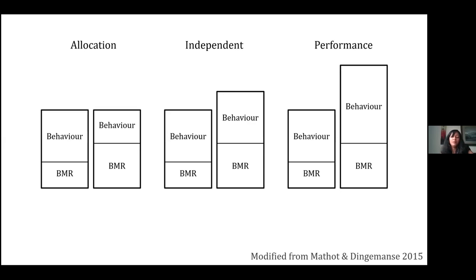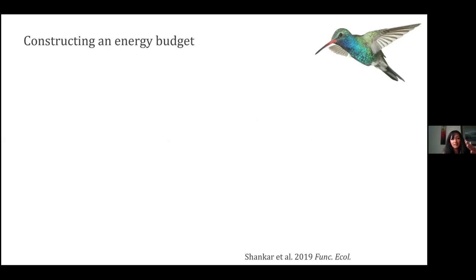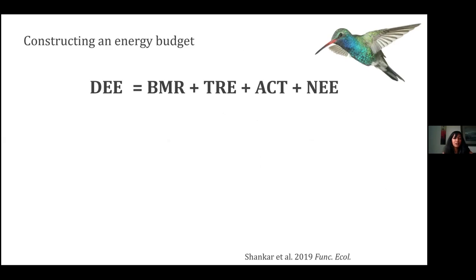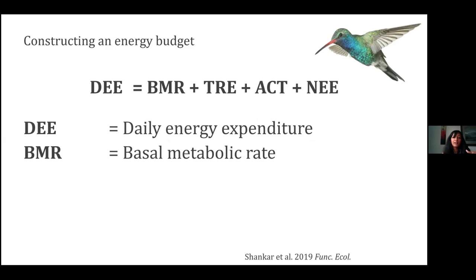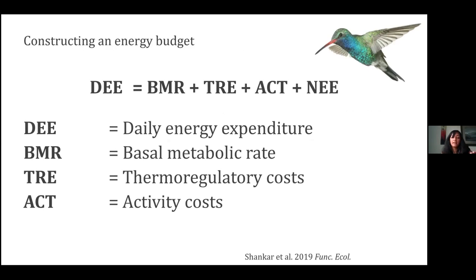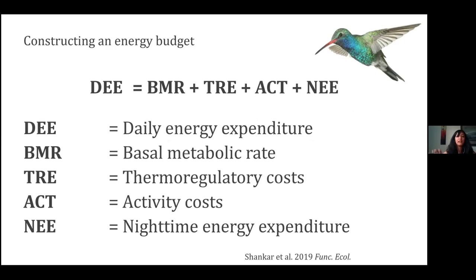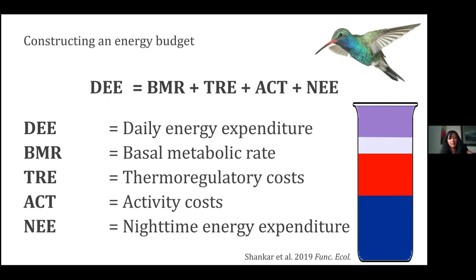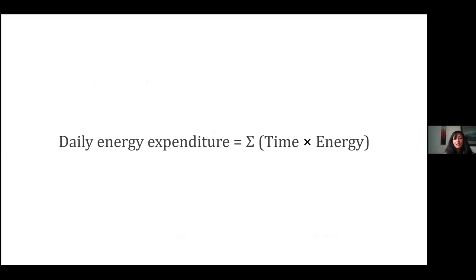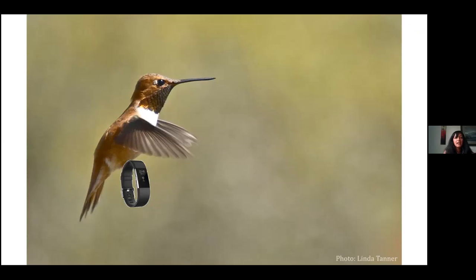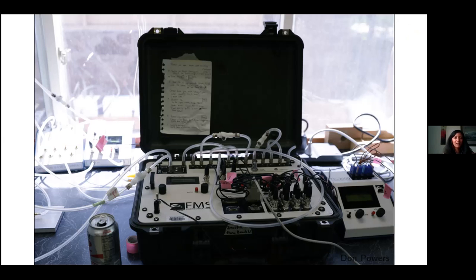We've already seen that hummingbirds don't fit the allocation model because their daily energy expenditure can change. To construct this energy budget, we look at: daily energy expenditure on the left, and basal metabolic rate, thermoregulatory costs, activity costs like hovering, flying, and perching, and nighttime energy costs on the right. If we measure all these things separately and add them up, they should equal what we found with doubly labeled water. The missing piece is the time they spend on each activity during the day — we can't put a Fitbit on something so small, and we don't have accelerometers small enough to study them.